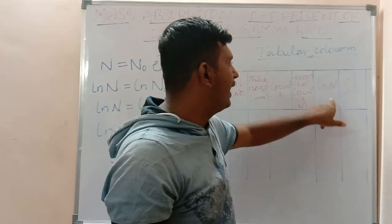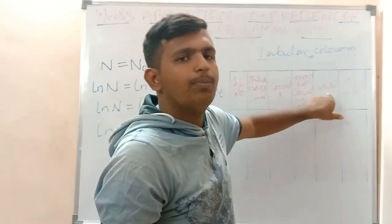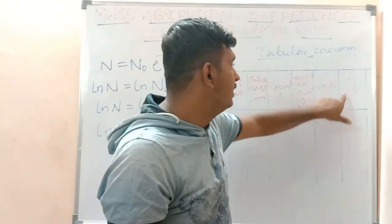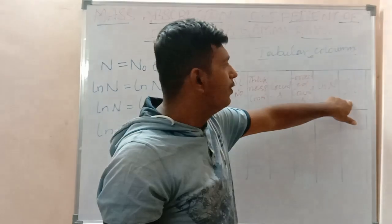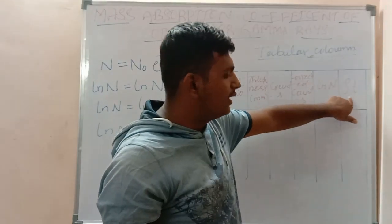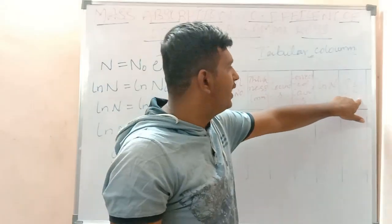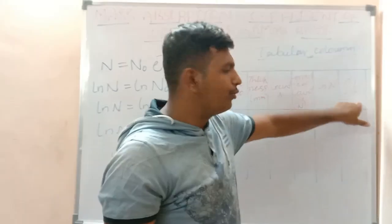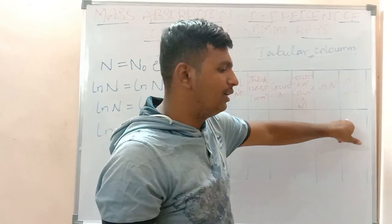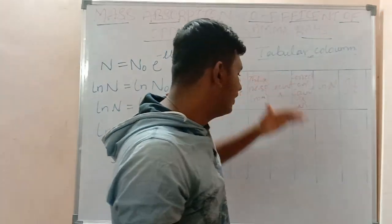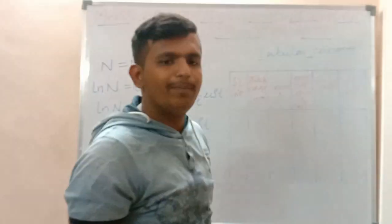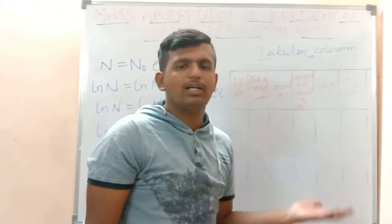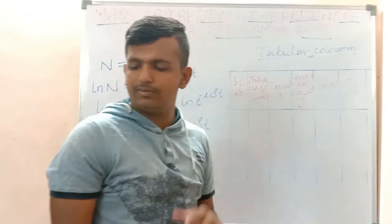The corrected count is N, and we take ln(N) for the y-axis. ρ is the density of copper and t is the thickness, so we multiply them to get ρt for the x-axis. Once we fill the tabular column, we proceed to plot the graph.